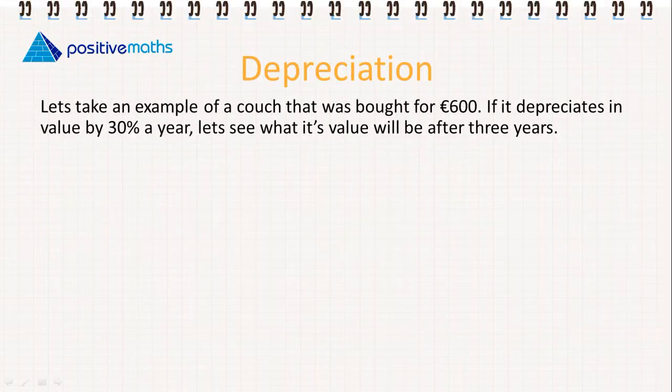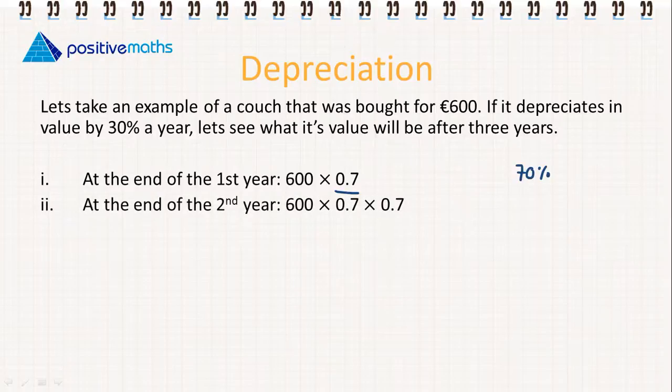Let's take an example of a couch that was bought for €600. If it depreciates in value by 30% a year, let's see what its value will be after three years. At the end of the first year, it's going to be 600 × 0.7. The 0.7 is 70% of the original value.